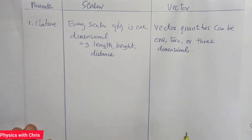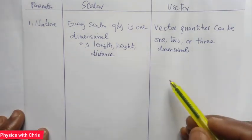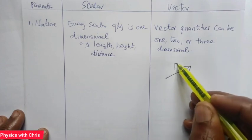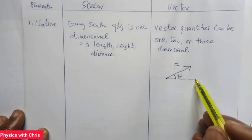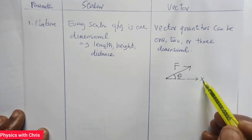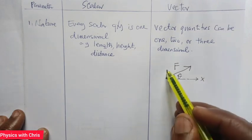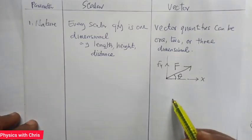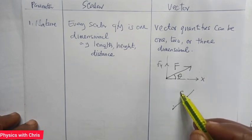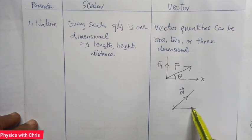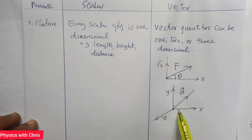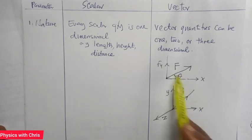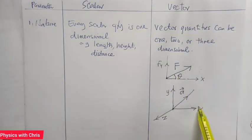But a vector can be one dimensional, two dimensional, or three dimensional. For example, a force vector F acting at an angle theta can be resolved into a component along the x-axis and also along the y-axis. Similarly, a vector A can have components along the x-axis, the y-axis, and the z-axis, making it three dimensional.